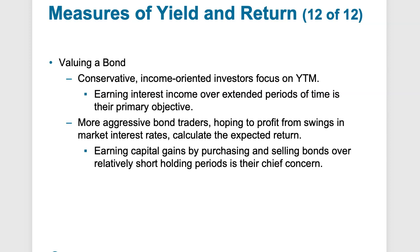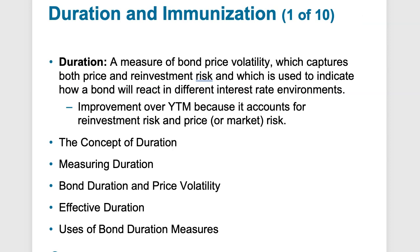If you're a bond investor, you'll really focus on yield to maturity — the interest income expressed as a percentage that you'll earn over your primary holding period. For more aggressive bond traders, they hope to profit from swings in market interest rates, trading bonds speculatively expecting rates to move in their favor, whether long or short, to make a return or capital gain along with any short-term interest. Duration is an interesting concept: we measure a bond's price volatility and capture both price and reinvestment risk to indicate how a bond will react to different interest rate environments.